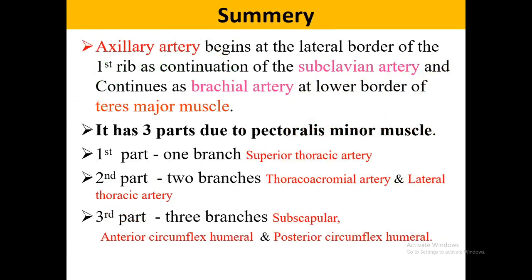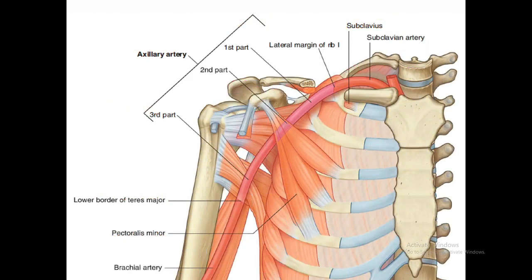In summary, the axillary artery has a defined starting and ending point and three parts, each with a specific number of branches — the first part has one branch, the second part has two branches, and the third part has three branches. A labeled diagram from the book represents the origin, termination, and three parts of this artery.